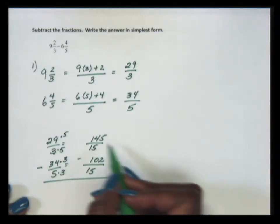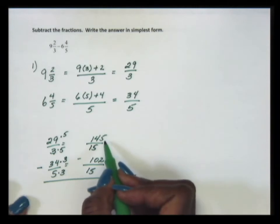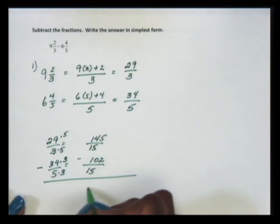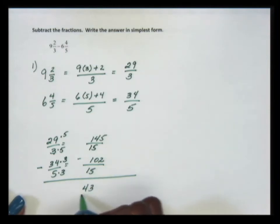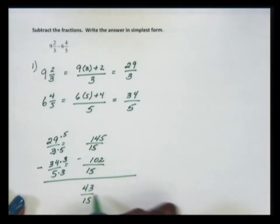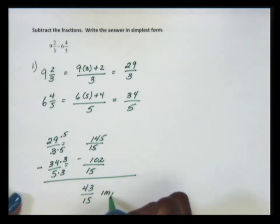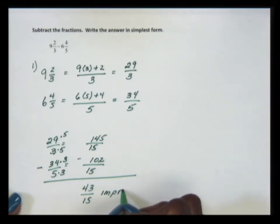So now I'm subtracting 145 minus 102. This gives us 43 with a denominator of 15, so the improper fraction form of our answer is 43 over 15.